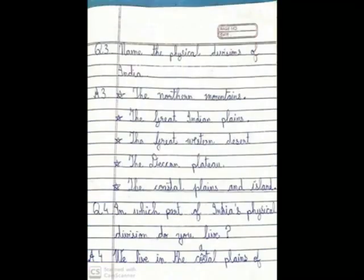Question 3. Name the physical divisions of India: the northern mountains, the great Indian plains, the great western desert, the Deccan plateau, and the coastal plains and islands.